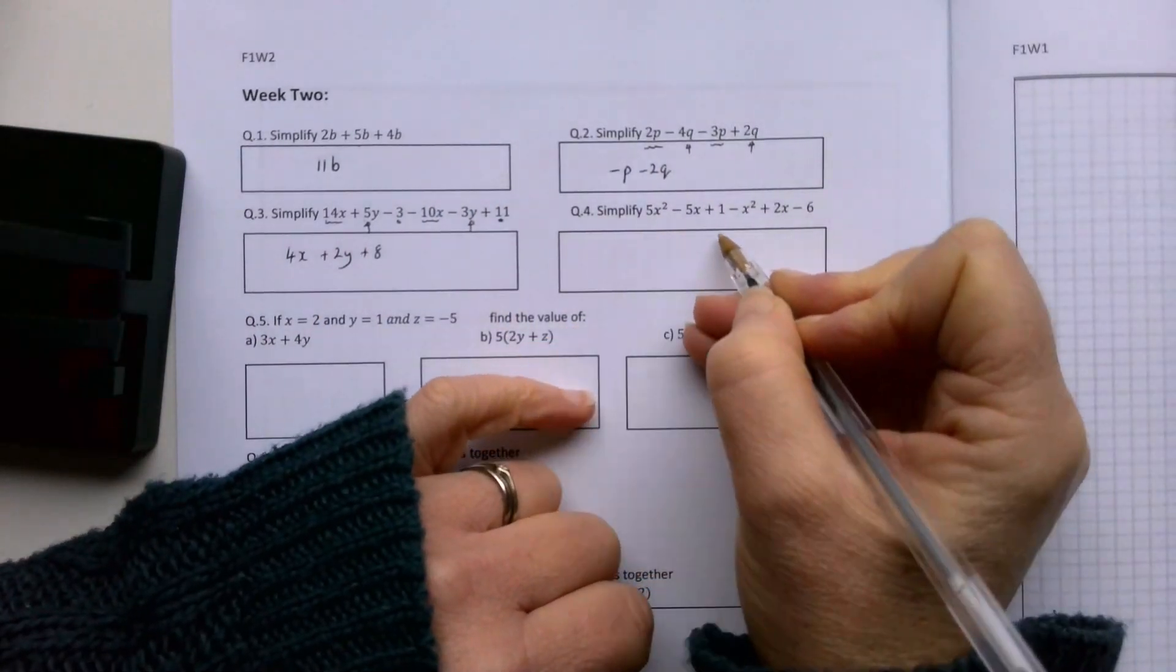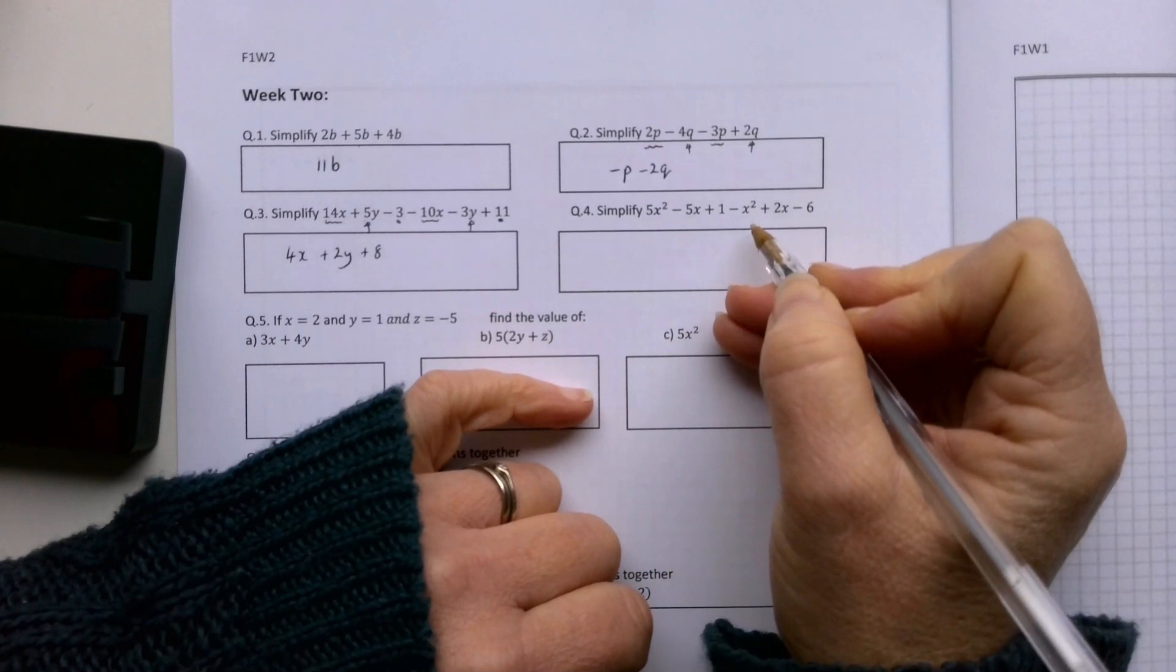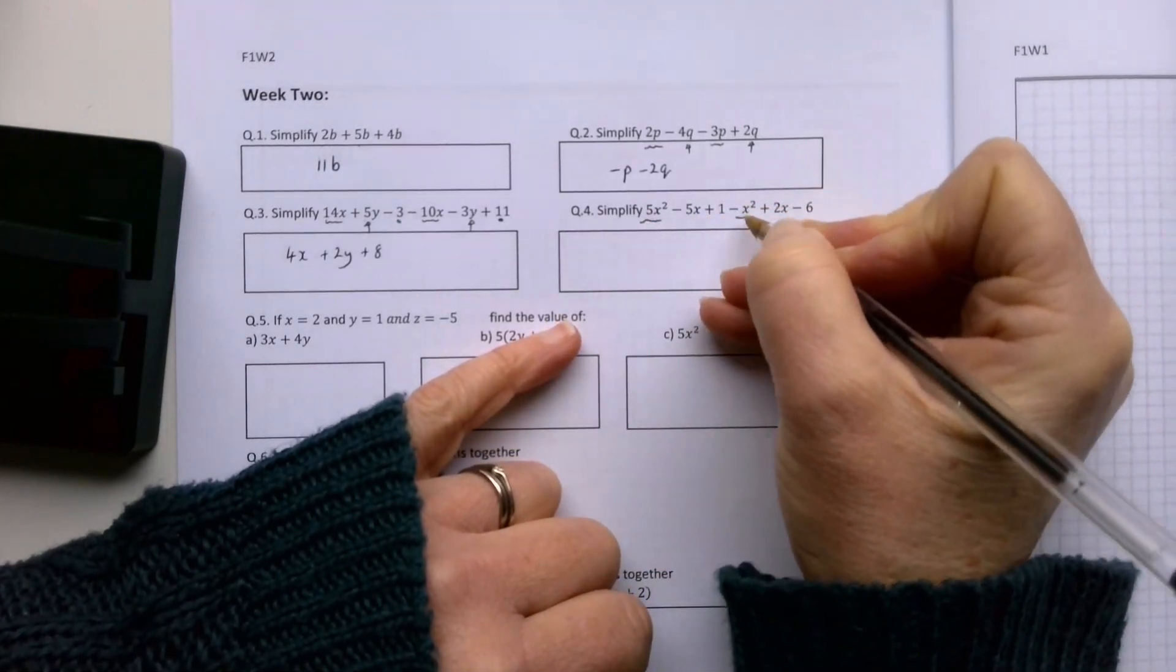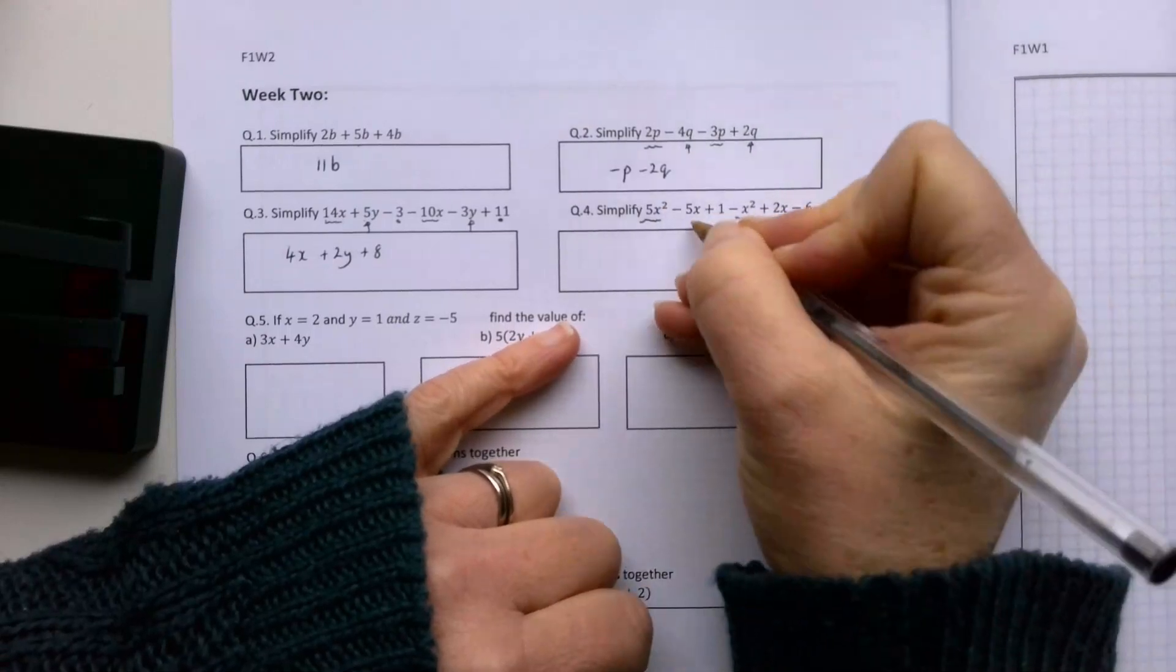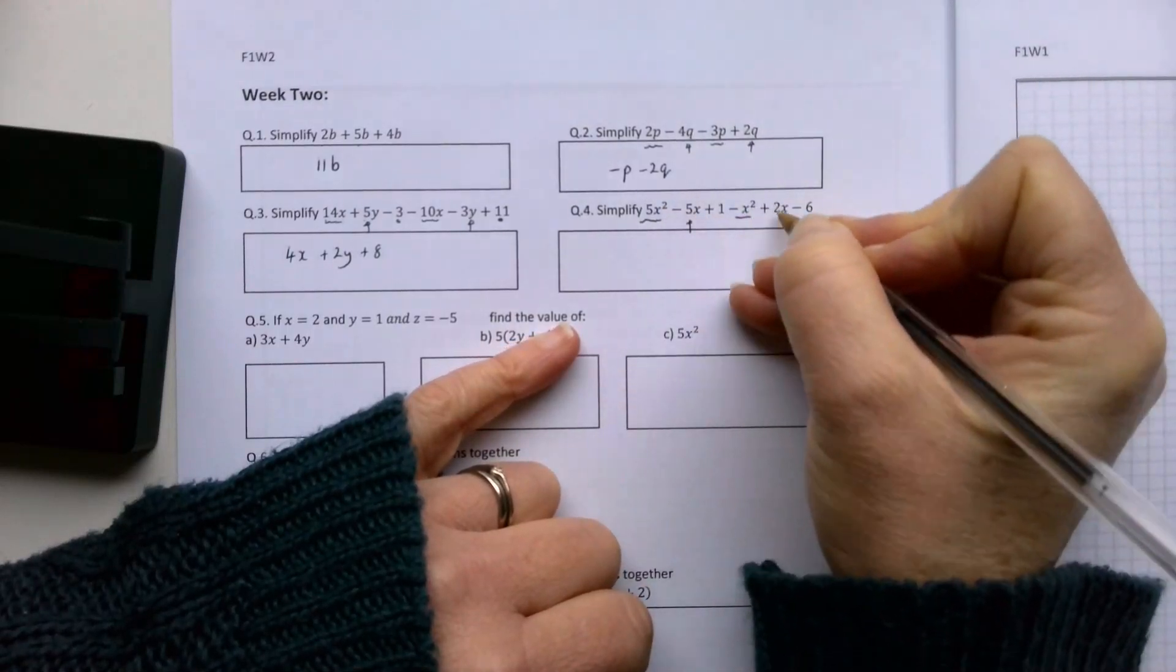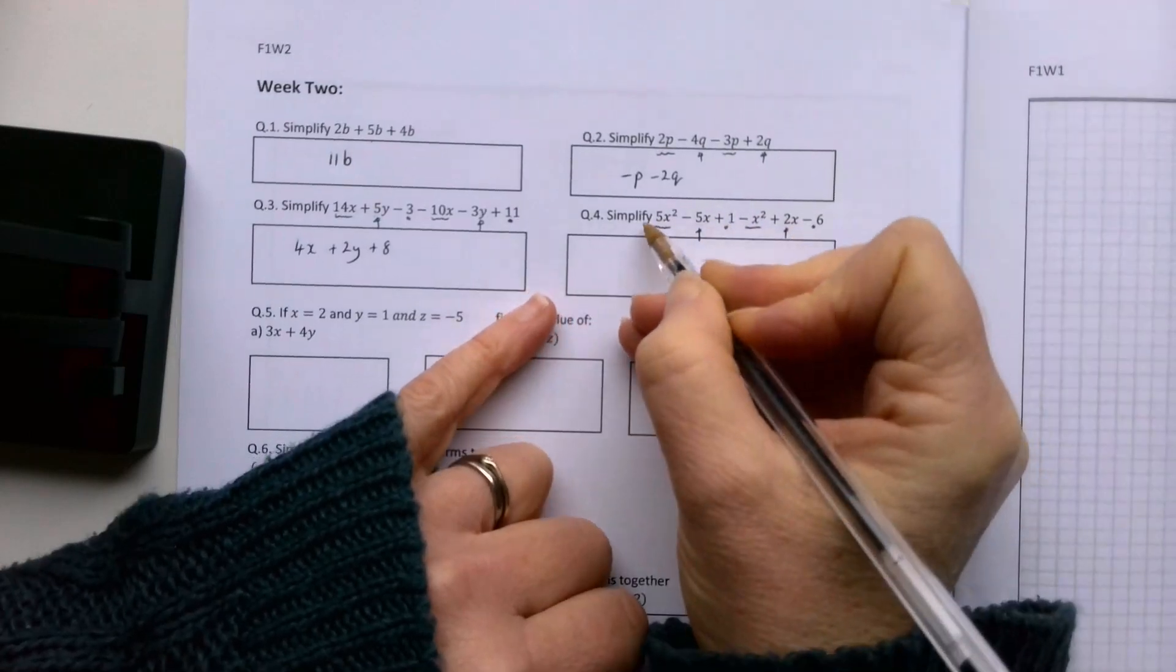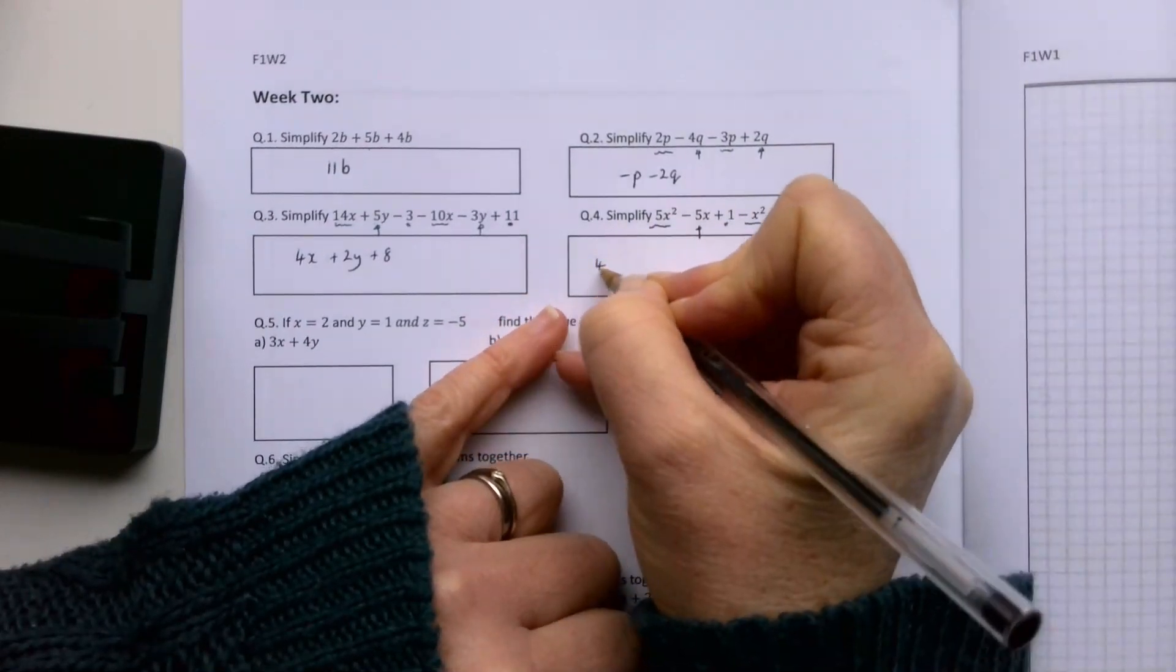Now here we have all the same letter but some are different powers. Remember, when we're adding and subtracting in algebra, the powers have to be the same as well as the letters. So the x squareds will go together, the x's will go together, and the numbers will go together. 5x squared minus 4x squared is x squared. Minus 5x plus 2x is minus 3x. Plus 1 minus 6 is minus 5.